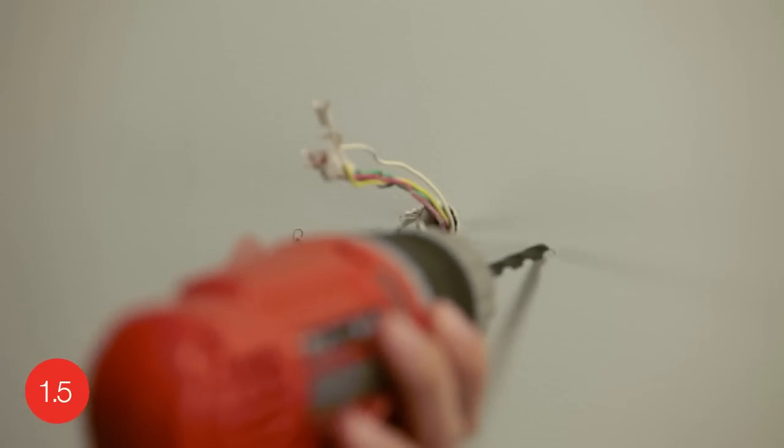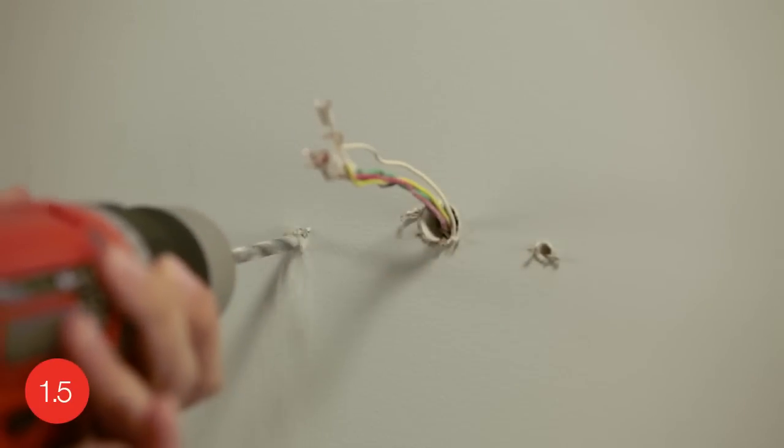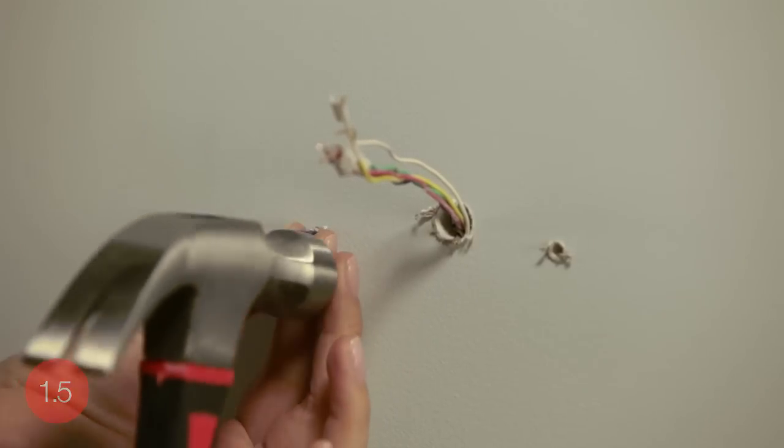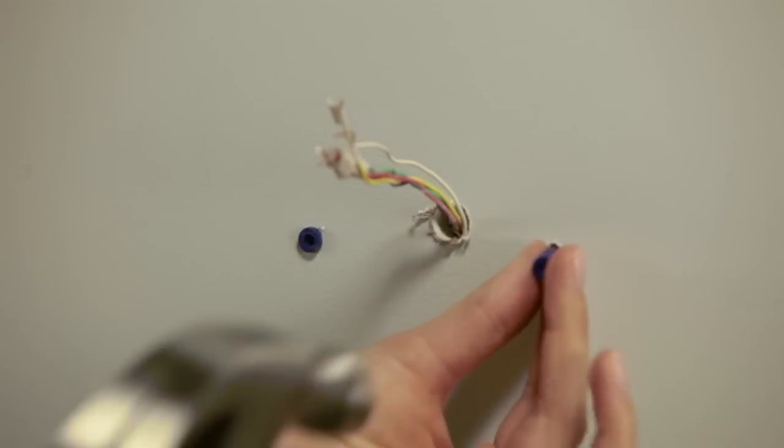If you are mounting the thermostat on drywall or plaster, use the drill bit indicated in your user guide. Once you have pilot holes, use a hammer to tap the anchors into the pilot holes.